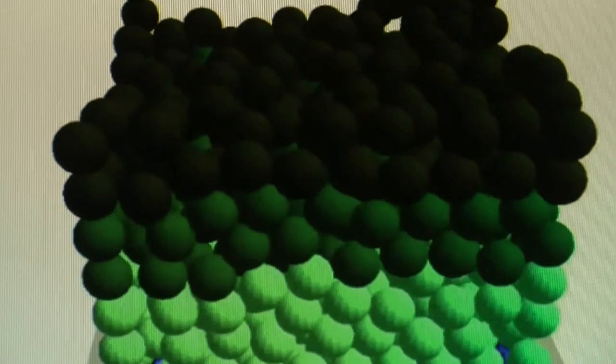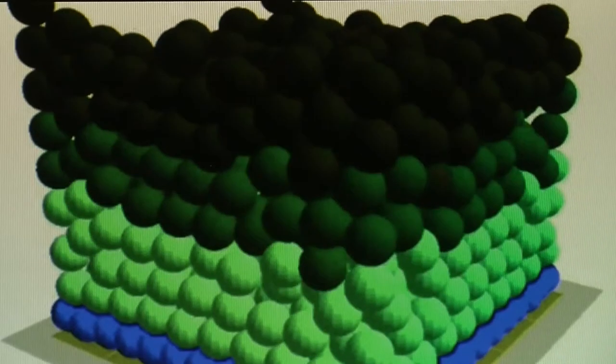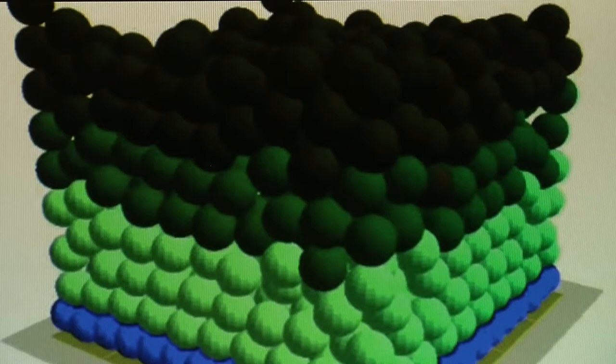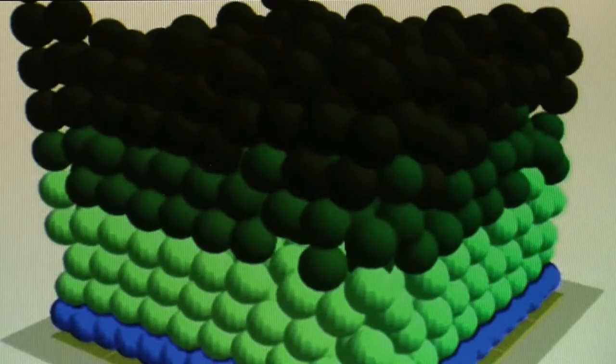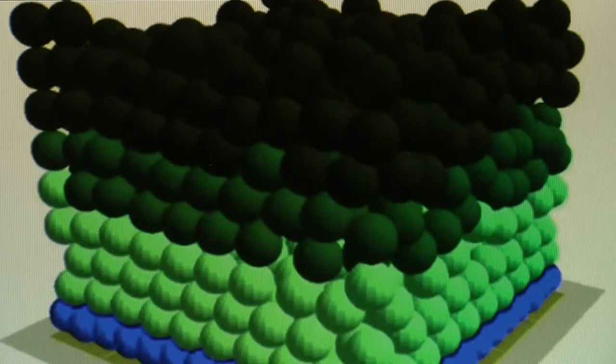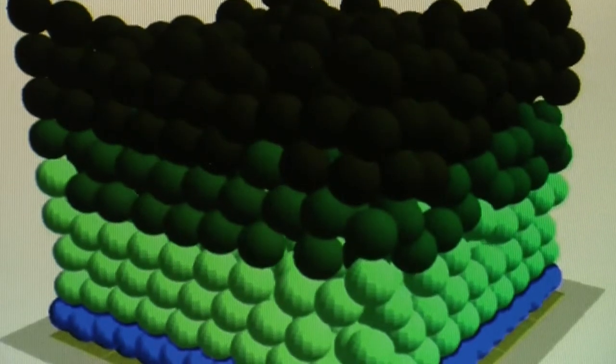Corneocytes lose their nucleus, they become flattened, and they are the cells which are on the surface of your skin. If they are on your hair these are the cells which produce dandruff.